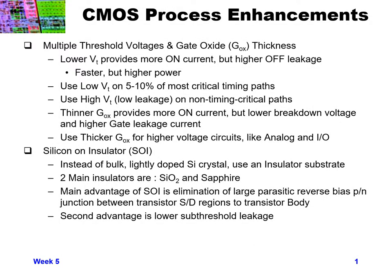As silicon process technology has continued over the last several decades, there have been numerous enhancements made to the basic process technologies. Let's go through a number of the largest process enhancements that have happened over the years. One of the first ones was using multiple threshold voltages and gate oxide thicknesses. Instead of using the same threshold voltage for all NMOS and all PMOS in our design and the same gate oxide thickness everywhere, we can customize certain transistors to have a different VT than other transistors.